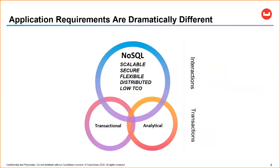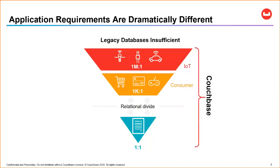In other verticals we see a similar thing — supply chain, IoT. Sometimes it's called 'massively interactive enterprises.' The application requirements are dramatically different for these use cases. You have your transactional database — the traditional relational database — and also an analytical database for reporting or BI, where you might use an ETL to dump data in every 24 hours. NoSQL really overlaps these cases where scale, flexibility, high availability, and performance can provide lower costs.